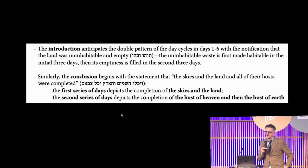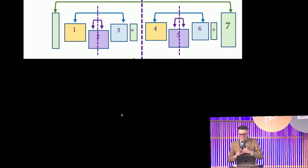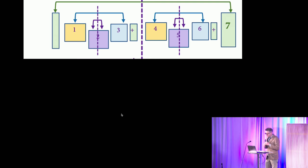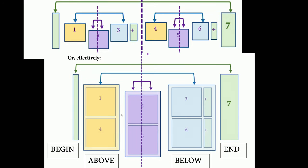The introduction anticipates the double pattern of day cycles in days one through six, with the notification that the land was uninhabitable and empty, tohu vavohu, and the uninhabitable waste is first made habitable in the initial three days, and then its emptiness is filled in the second set of three days. Going to the conclusion, it begins with the statement that the skies and land and all their hosts were completed. The first series of days depicts the completion of the skies and the land. The second series of days depicts the completion of the hosts of heaven and the hosts of earth. These parallel brackets, this inclusio, also supports a chapter-wide inversion symmetry that pairs the celestial and the terrestrial realms and their corresponding population and rulers.